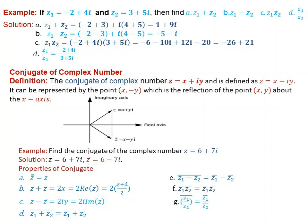Properties of the conjugate of complex numbers. The first property is: the conjugate of the conjugate of z equals z.